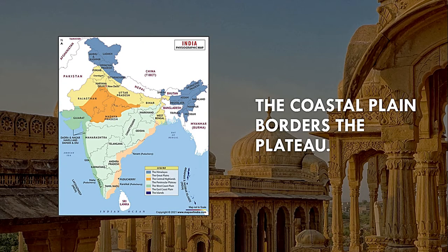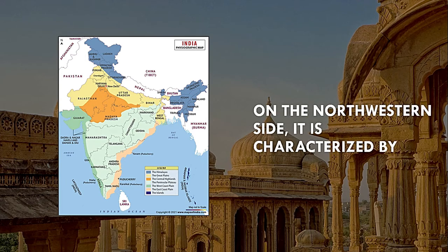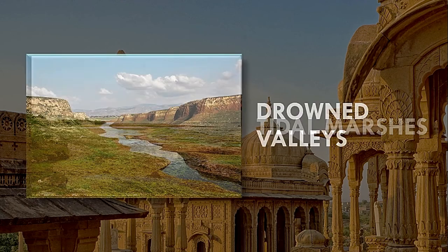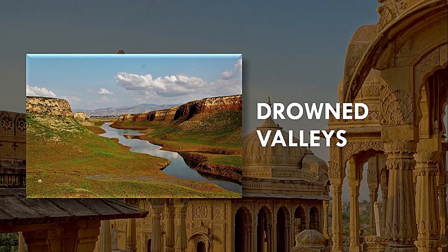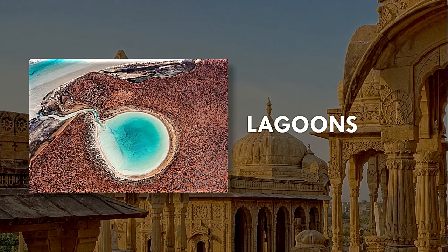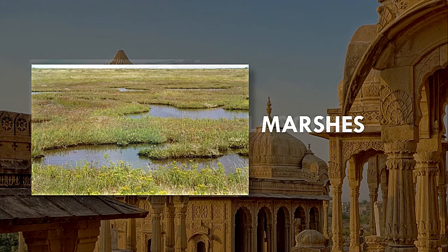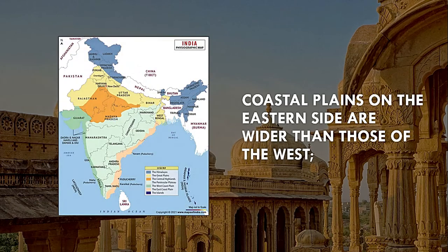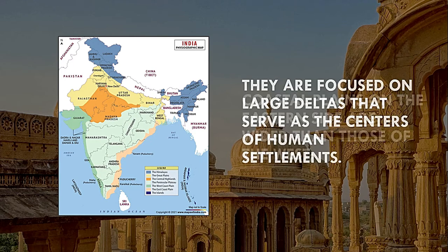Coastal plain borders the plateau. On the northwestern side, it is characterized by tidal marshes, drowned valleys, and estuaries, and in the south by lagoons, marshes, and beach ridges. Coastal plains on the eastern side are wider than those in the west. They are focused on large river deltas that serve as the centers of human settlements.